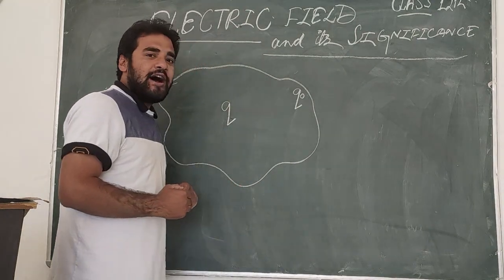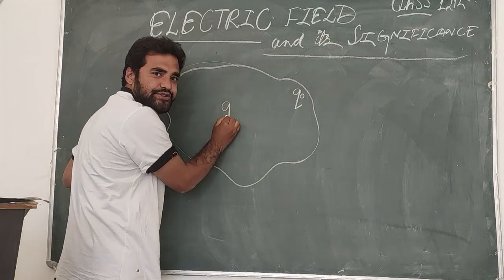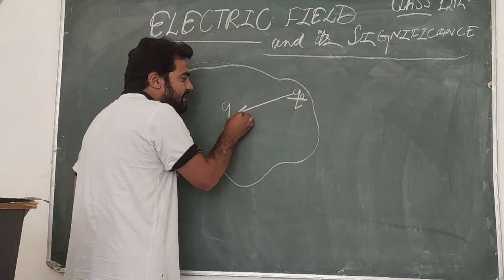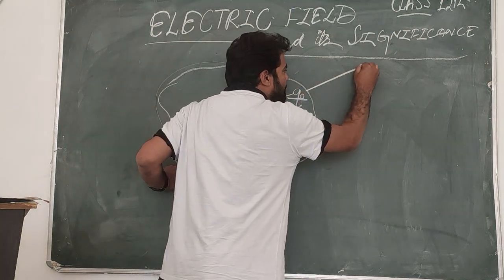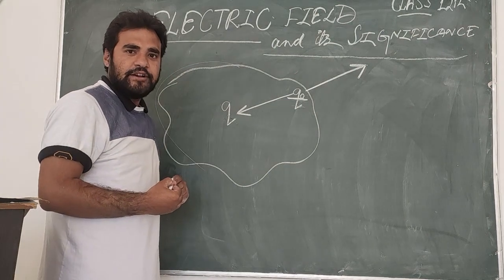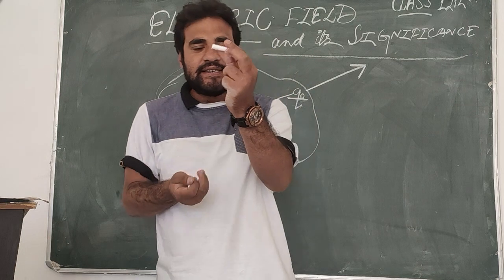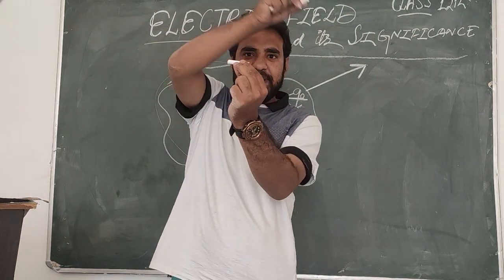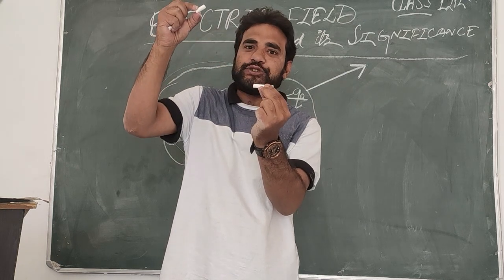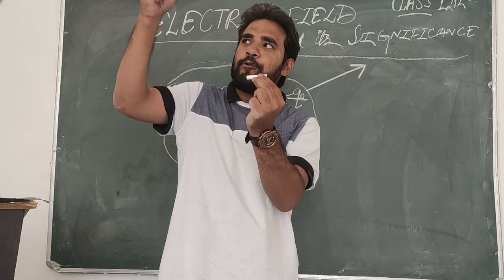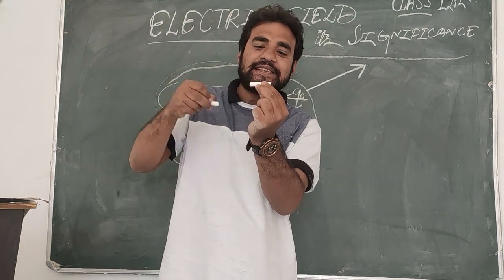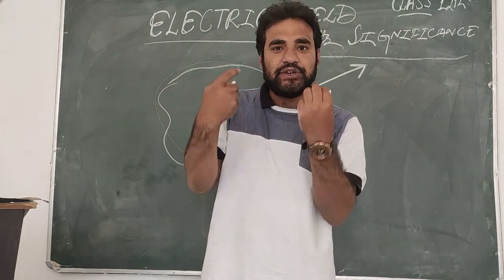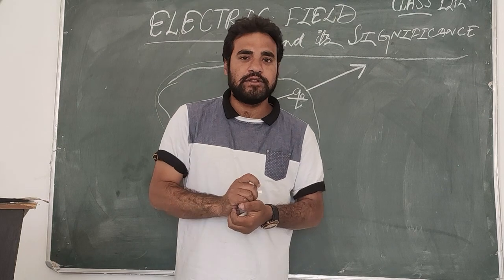So, electric field is the space around a charge where another test charge experiences a force of attraction or force of repulsion. This space around the charge is what we call the electric field of that charge.